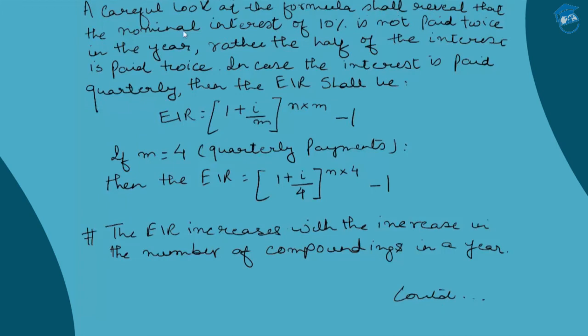When compounding takes place quarterly — four times in a year — the nominal rate is fragmented into four equal parts. For every three months, whatever interest is earned on the principal is added back and a fresh one-fourth interest is earned on the new principal. This process repeated four times a year results in a higher effective interest rate than semi-annual compounding. The effective interest rate increases as the number of compoundings per year increases.